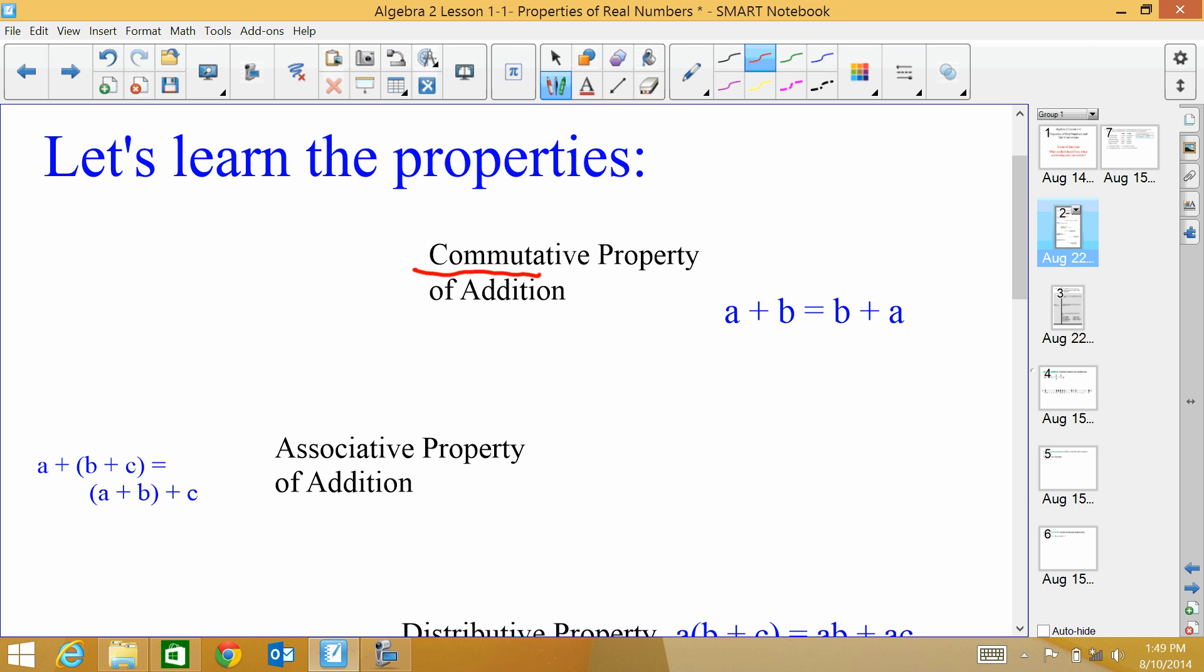The next one is the associative property. Now you'll notice in this example, we have A plus (B plus C) equals (A plus B) plus C. Now, the numbers or the letters A, B, C did not change places. They stayed the same, but the parentheses on this one were around the B and the C, and then the parentheses around the second one are around the A and the B. So when the parentheses change places, that is the associative property.